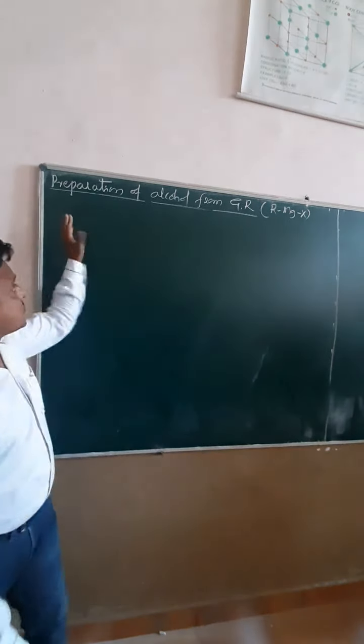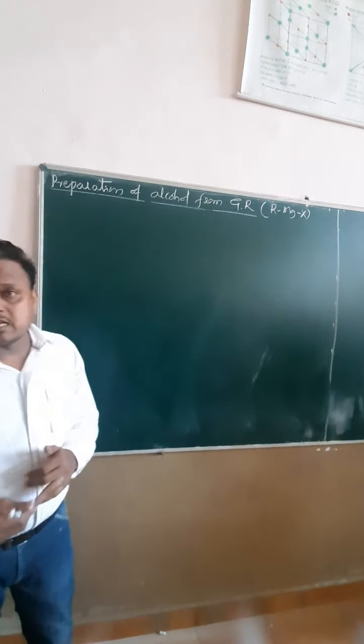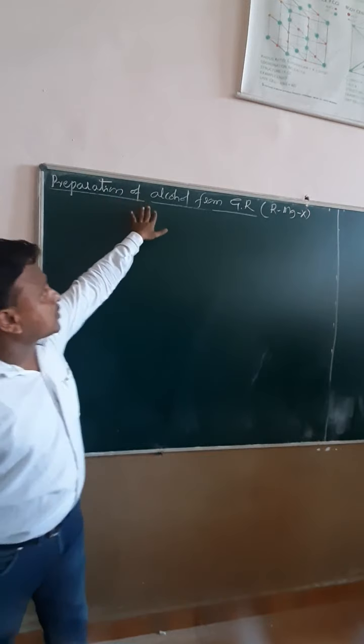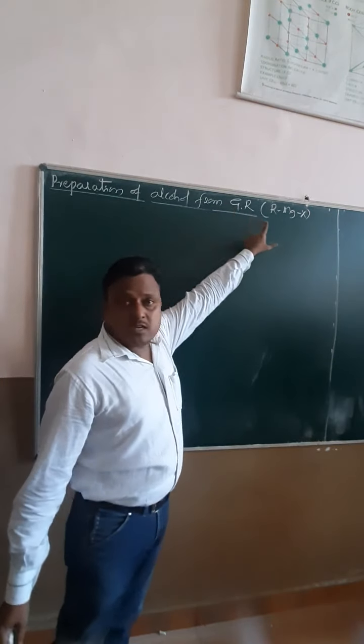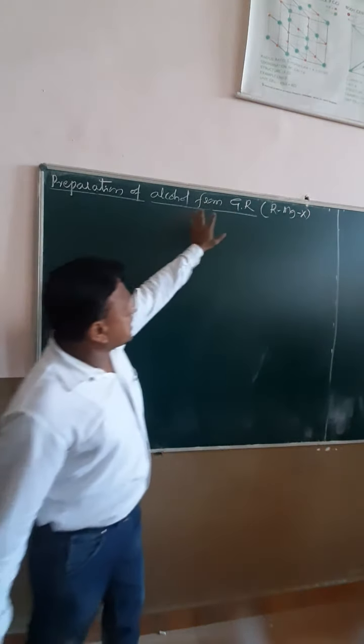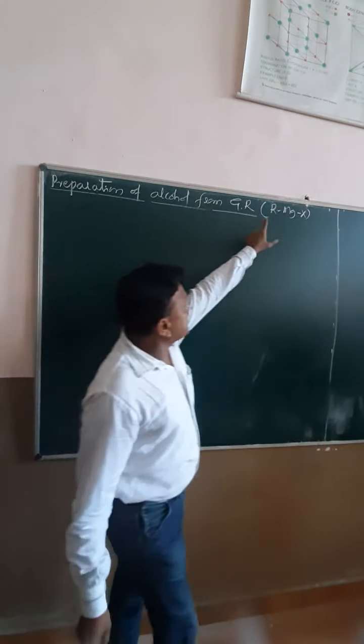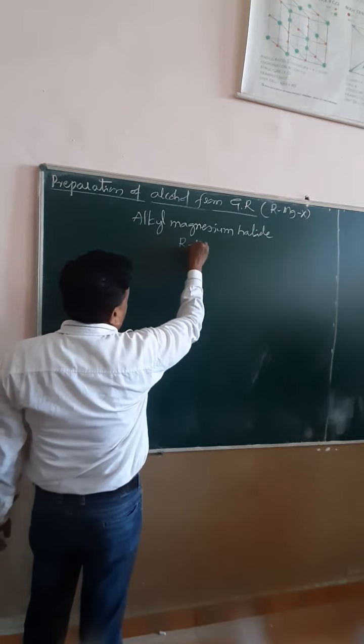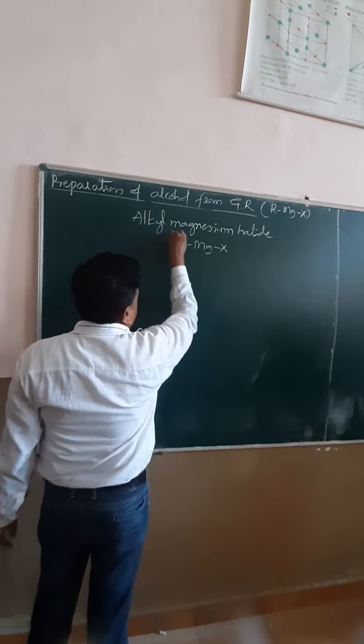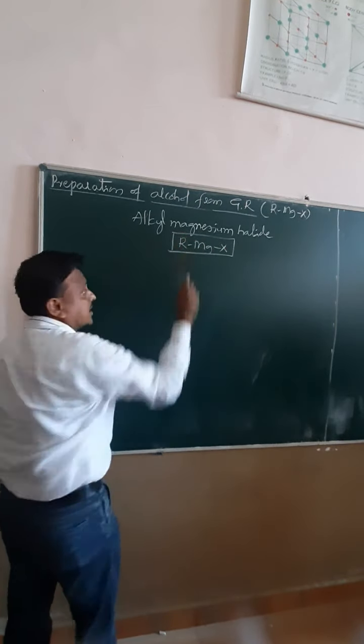Dear friends, today we move on to the next method: the preparation of alcohol from Grignard reagent. I think all of you know Grignard reagent is nothing but R-MgX. R-MgX means alkyl magnesium halide. The general formula is R-MgX. This is your Grignard reagent.